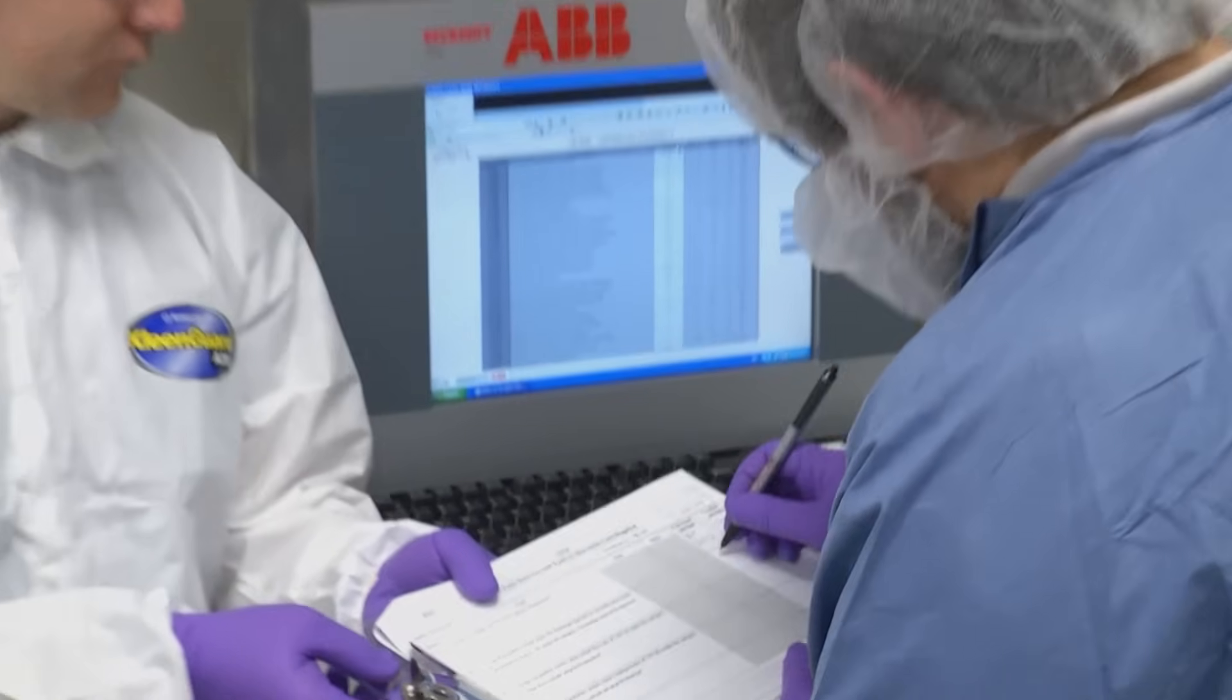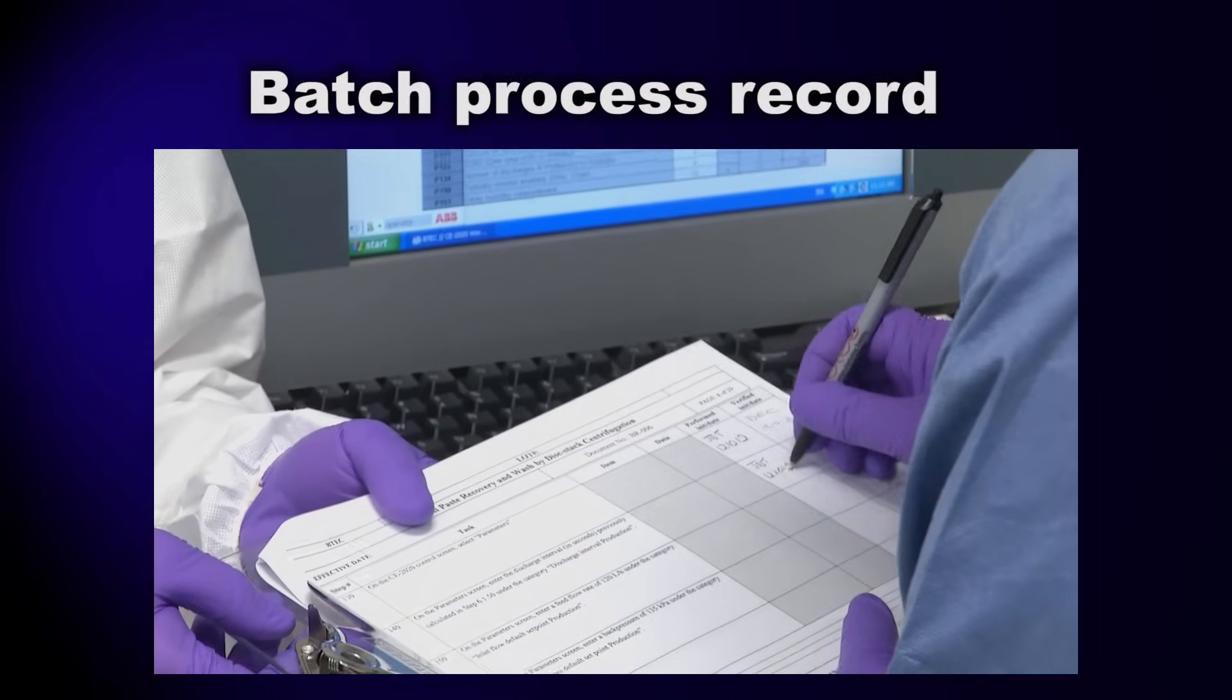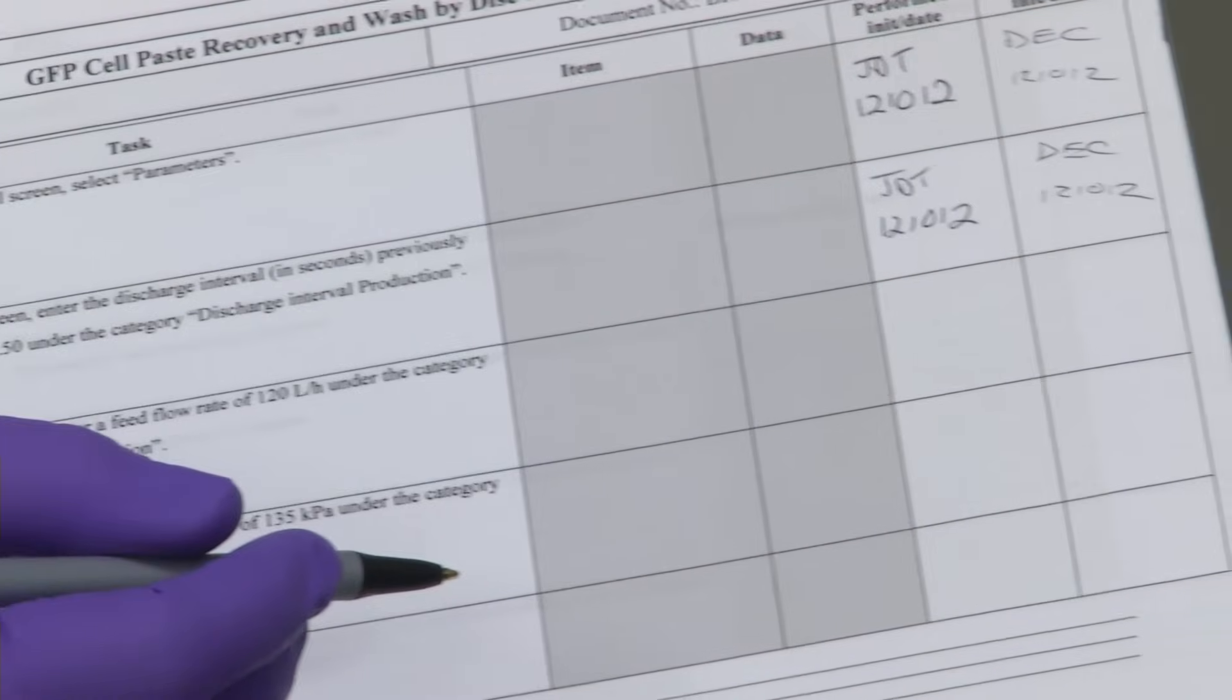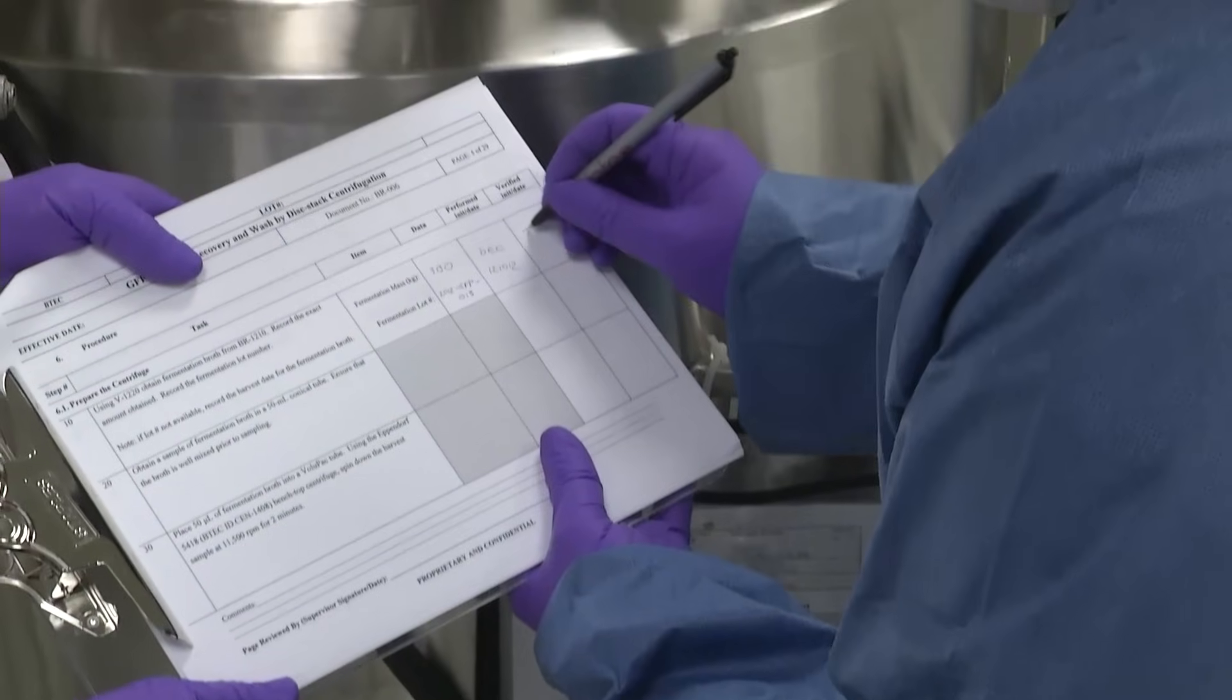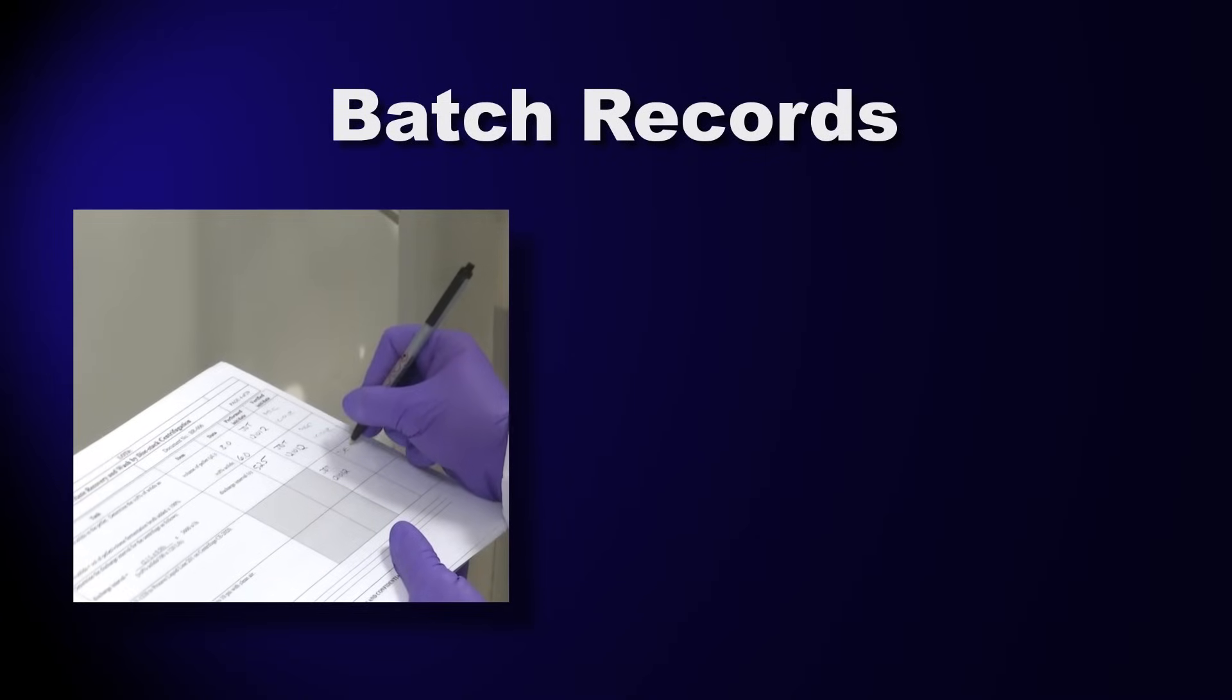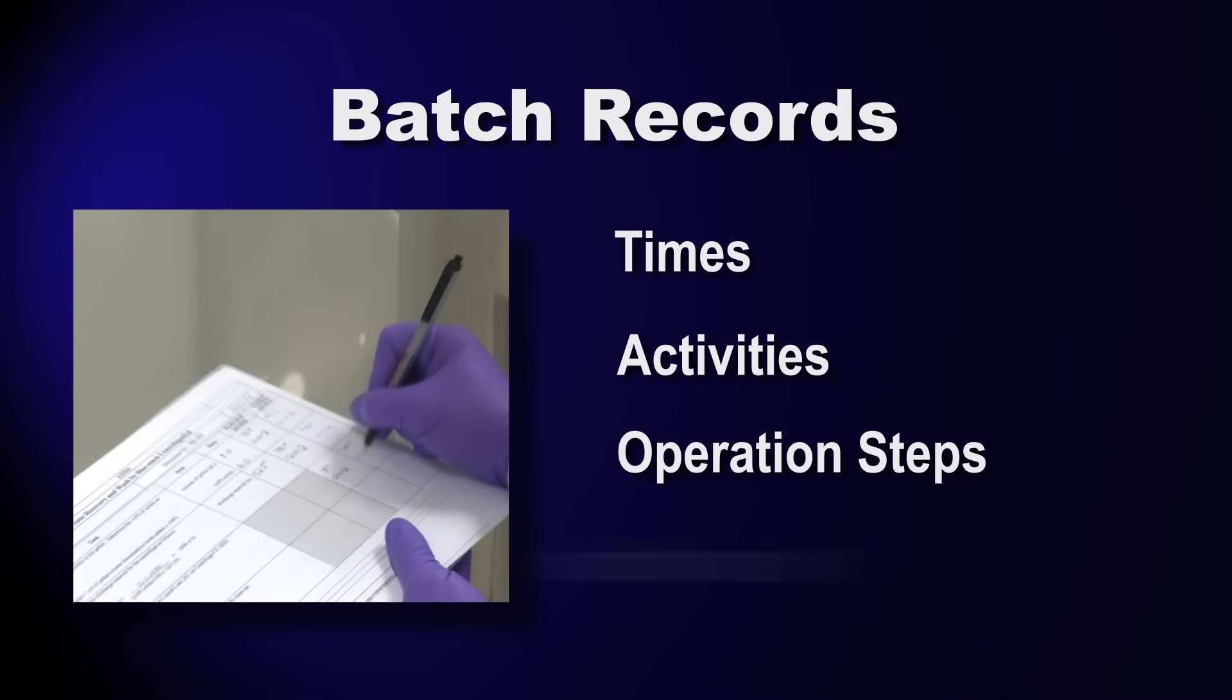The recovery process is managed through the use of a batch process record. The batch record leads the operator through the process step by step, with each step requiring a sign-off and separate verification by a second operator. This record also includes spaces for documenting times, activities, operation steps, and instrument readings.